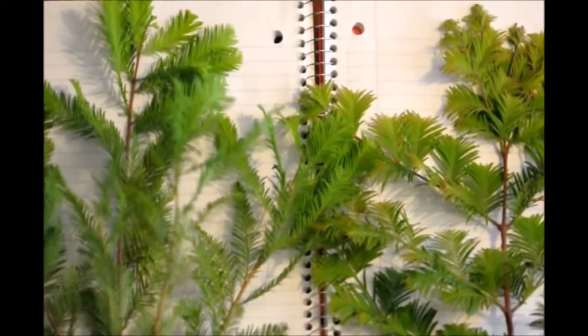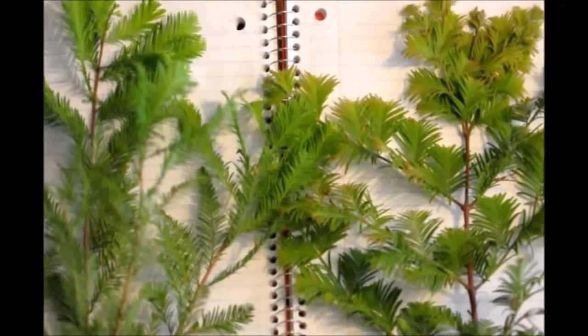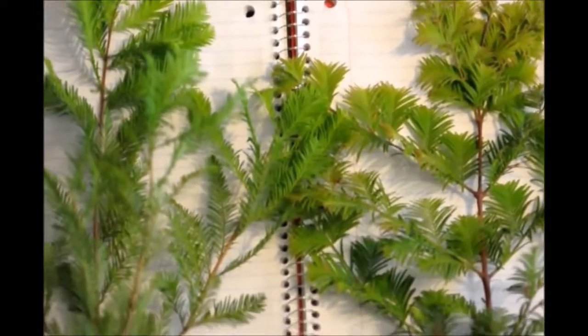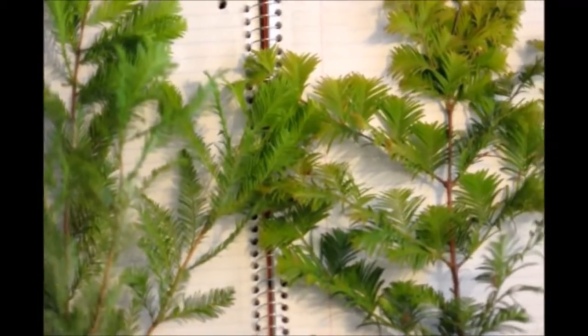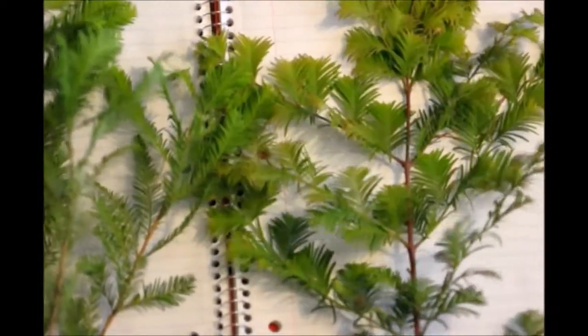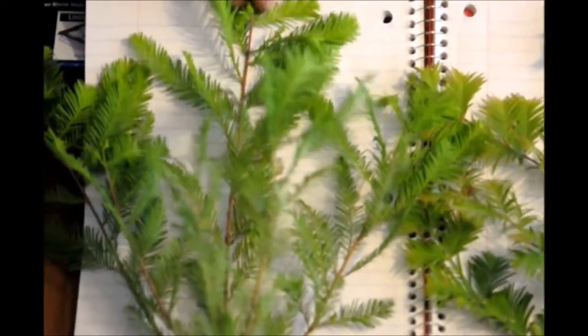To tell the two apart, the first thing we always look at is how the leaves are arranged on the stem. We call it either opposite, which is what the dawn redwood is, or alternate, which is what the bald cypress is.